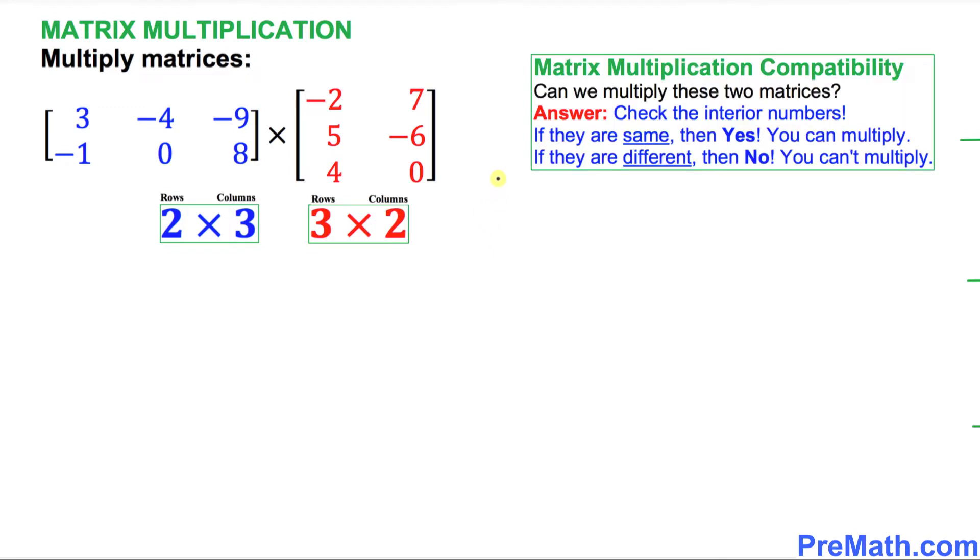So let's get started. Before we multiply these matrices, we are going to check matrix multiplication compatibility. In other words, can we multiply these two given matrices? In order to find out, we can look at the interior numbers, the inside numbers, the ones that I circled. Just check these numbers. Are these numbers the same? Yes, these numbers are the same, which means yes, we can multiply these two given matrices.